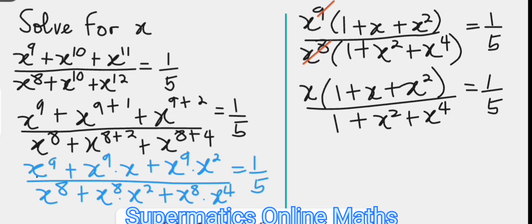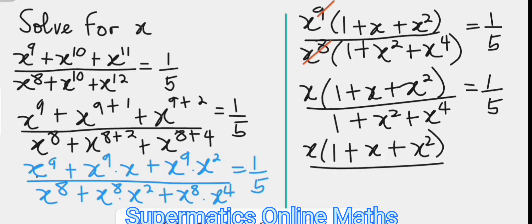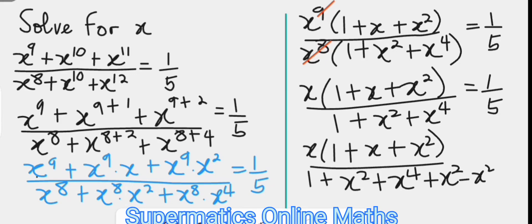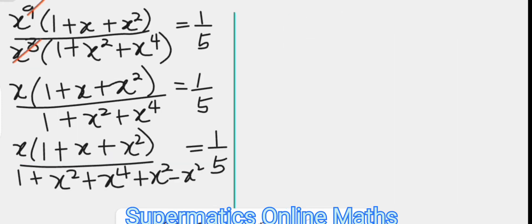At this point we try to manipulate the denominator in order to factor out what we have in parentheses in the numerator. This is done by writing the denominator as 1 plus x squared plus x to the power of four, then adding x squared and equally subtracting x squared, so that remains equal to one over five.